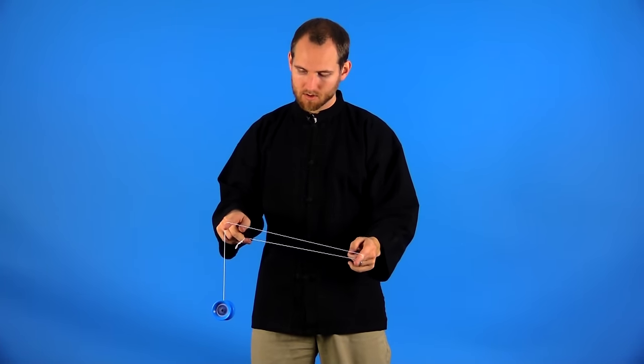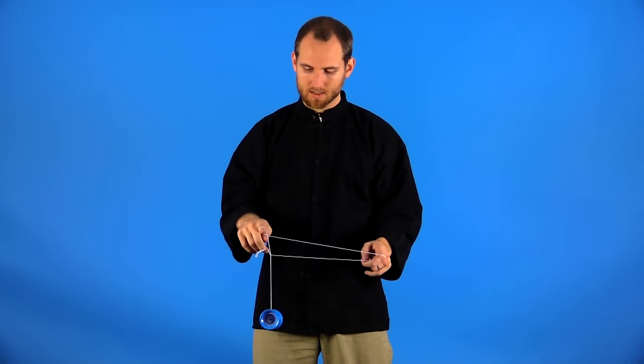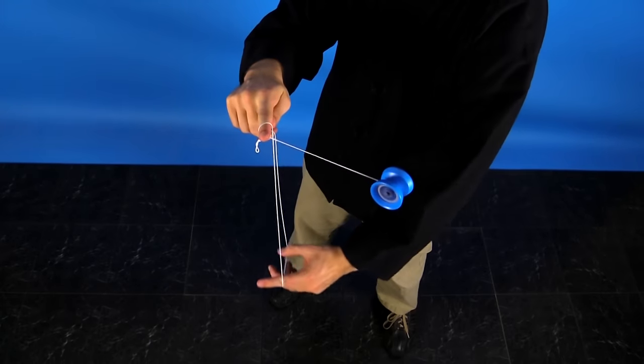From here, you're going to swing the yoyo in front and move your string behind, and that will set you up for the next part of the trick.